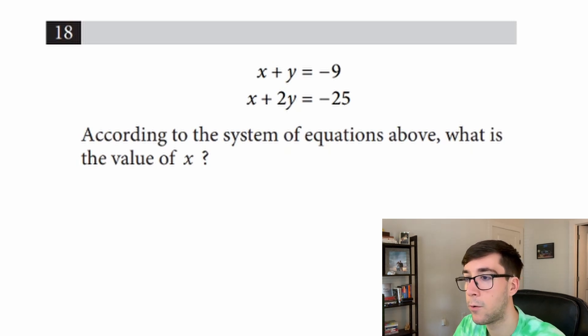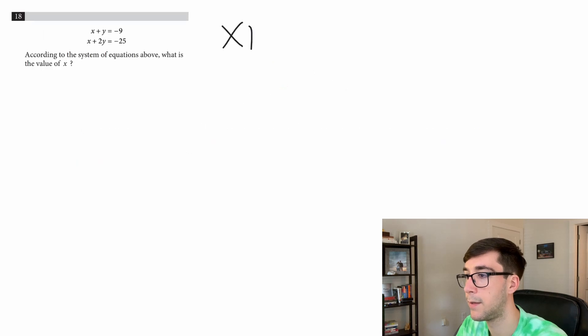That's what a system means: comparing different equations, looking at their properties and usually finding where they intersect. Let's read it: according to the system of equations above, what is the value of x? So I like to always start by writing my equations on the side: x plus y equals negative 9 and x plus 2y equals negative 25.